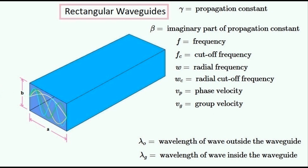Waveguides won't guide electromagnetic waves that are below a certain frequency, and this frequency is called the cutoff frequency. The waves are still guided but with a huge attenuation as they go through the guide. Waves with frequencies higher than the cutoff frequency are guided without loss.